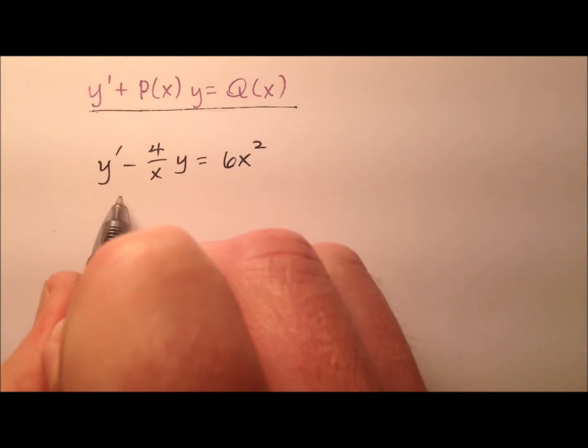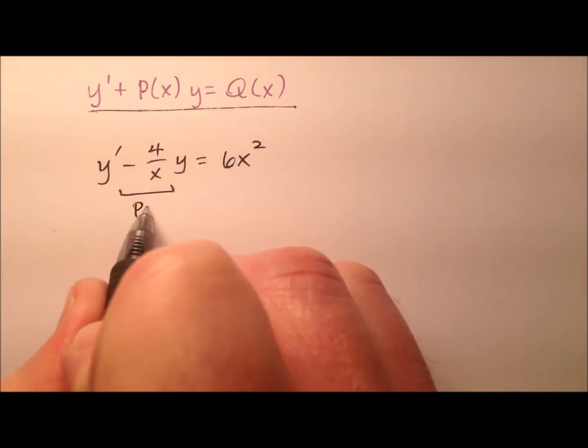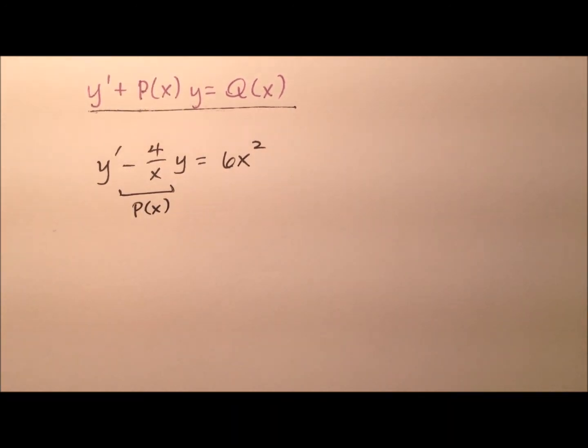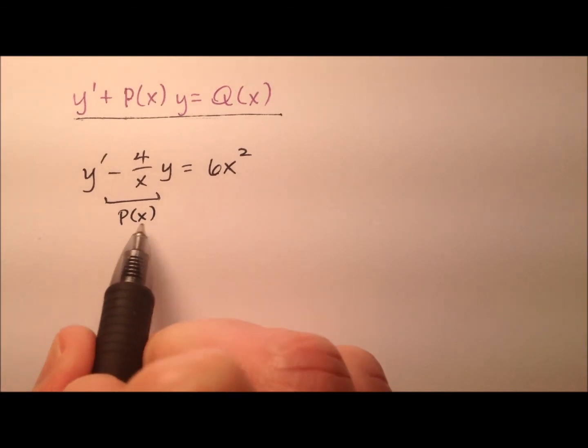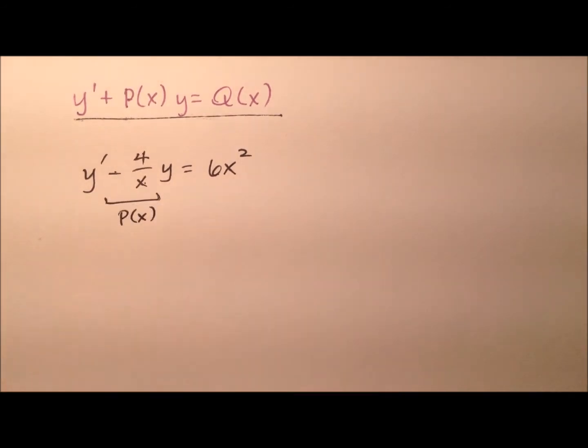All right, so the next thing I need to identify is my p of x because I need to use that to find my integrating factor. So my p of x looks like negative 4 over x.